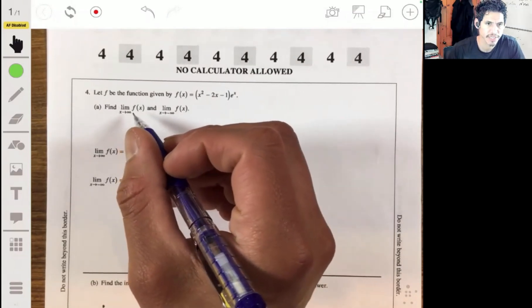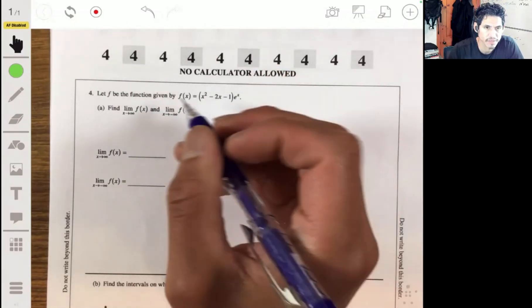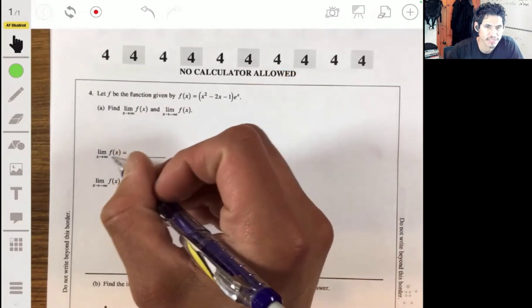Find these limits as x approaches infinity and as x approaches negative infinity for f of x. Okay, so let's look at first approaching positive infinity.